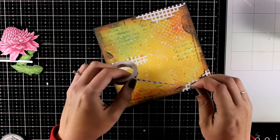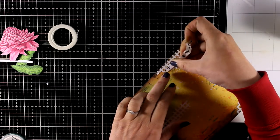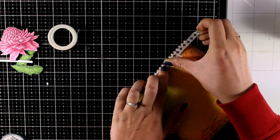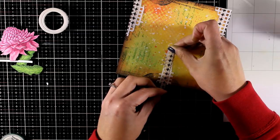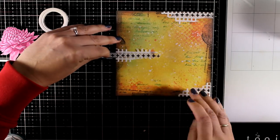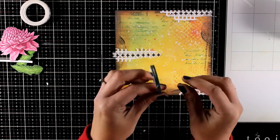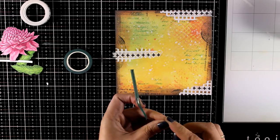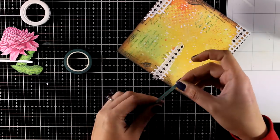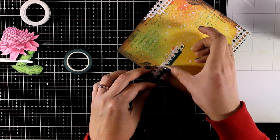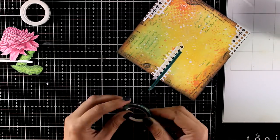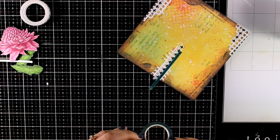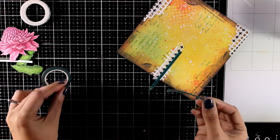On top I'm using a couple more washi tapes to add extra color. One of my favorites by Altenew is this one with the plus signs—I love it for art journaling. I'm also using another one that has a very thin strip of gold in the middle. I love how this brings some shine on my page that matches the background, which is already shiny from the sprays.